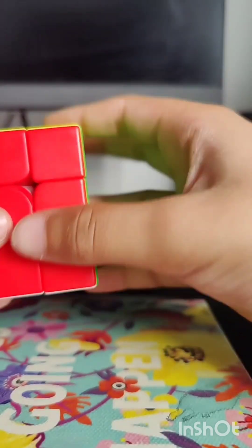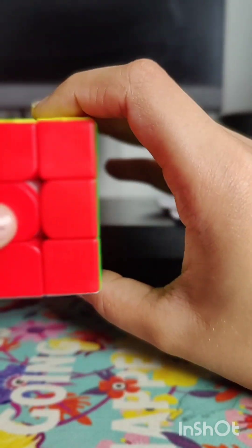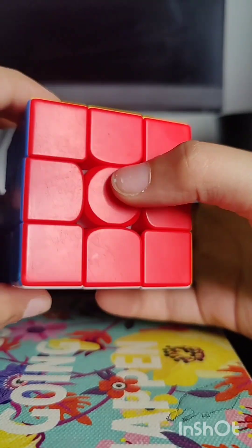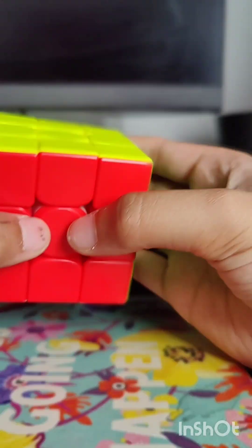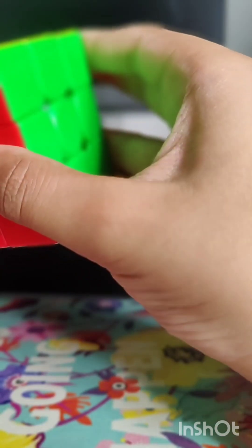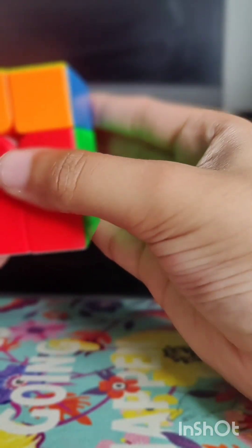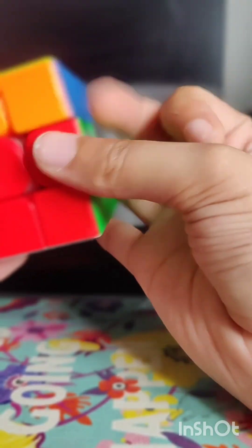For R2, we have to do—you have to re-grip like this and R2. Same for left L2. And for U2, we have to do index, middle, index, middle, index, middle.